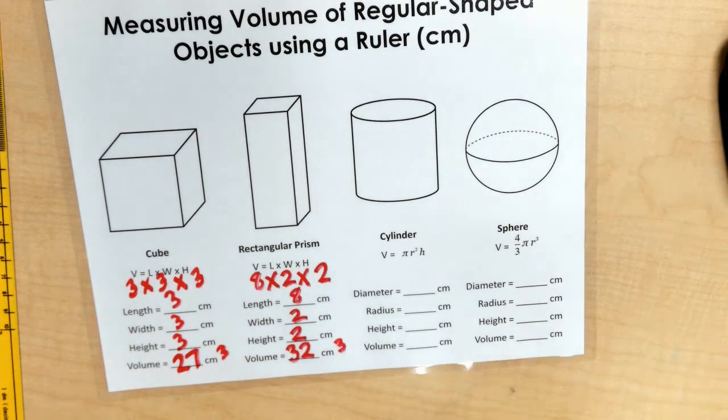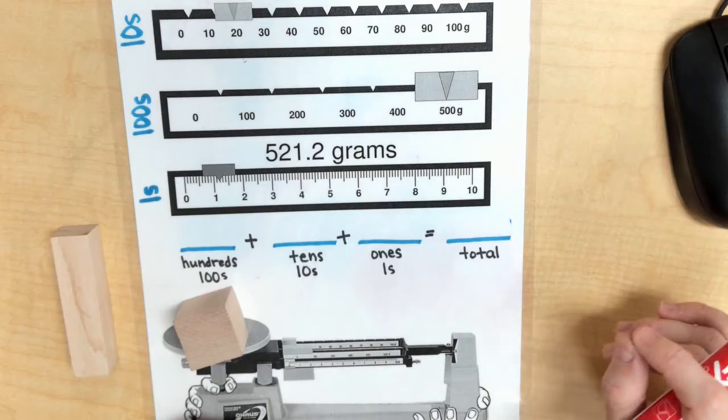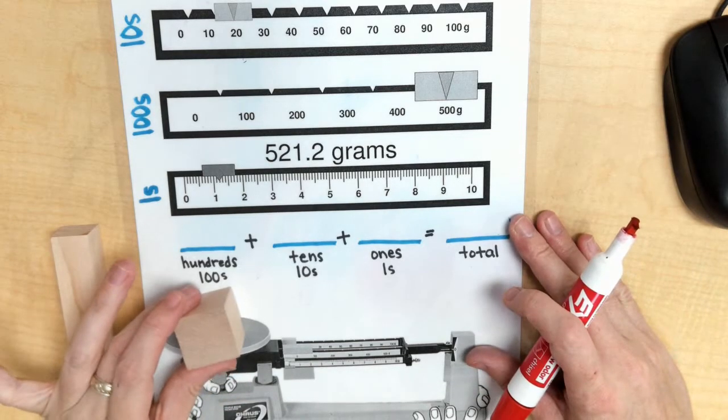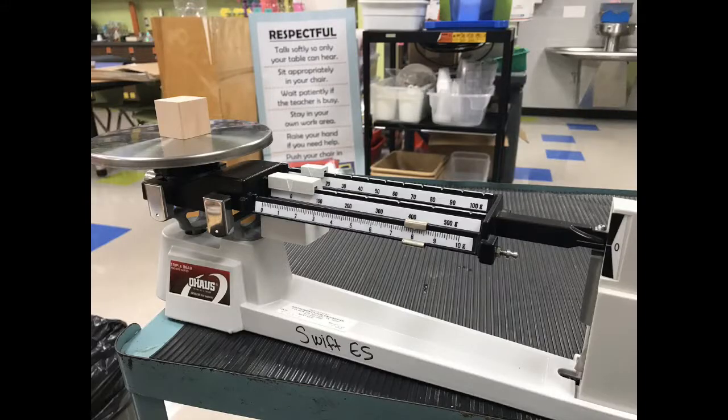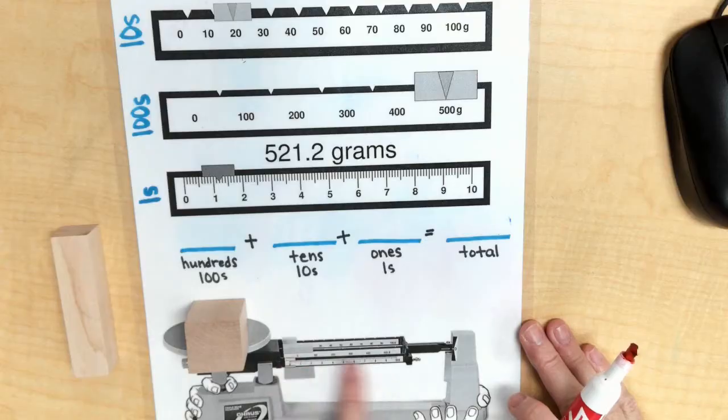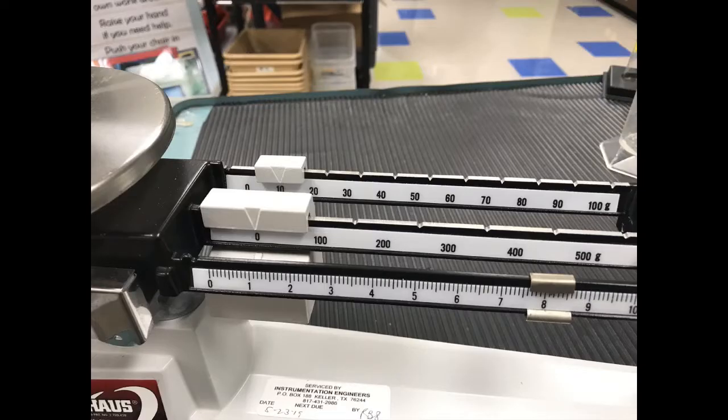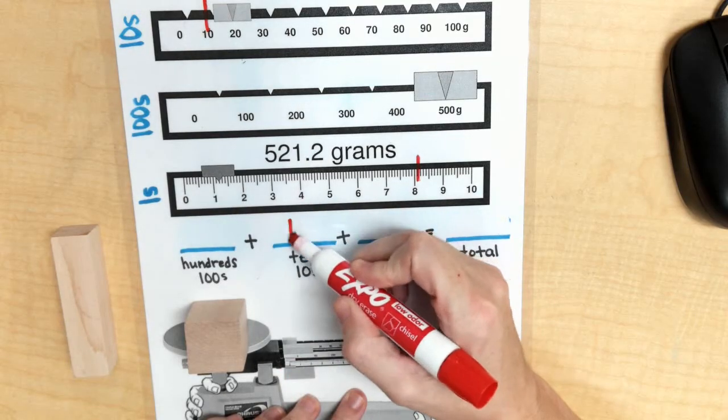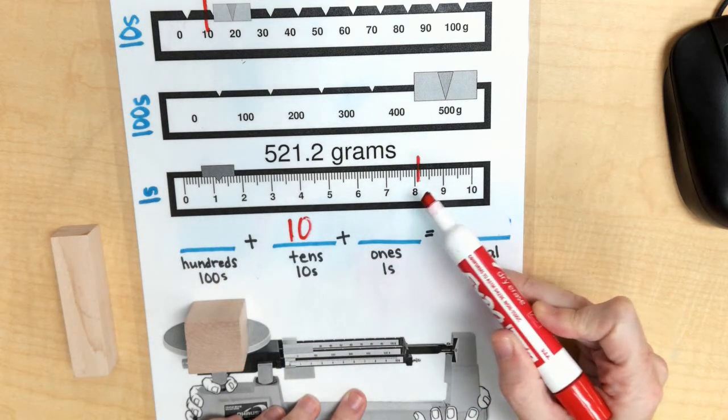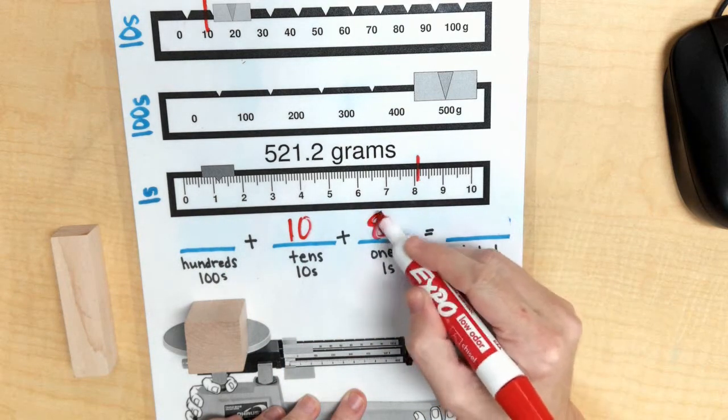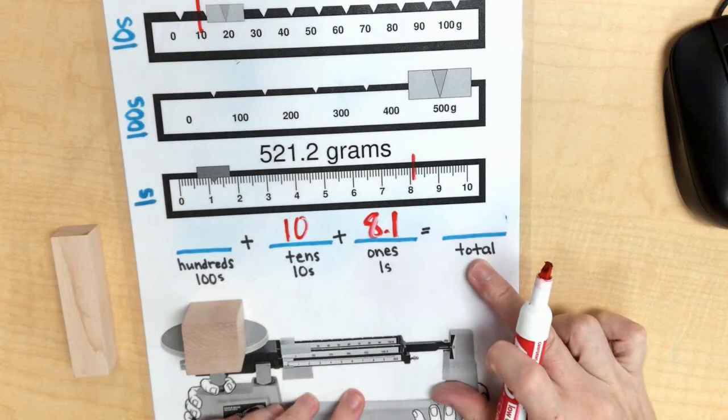So when measuring the mass of my cube, I placed it on my triple beam balance. I moved the riders over to where it leveled off. And it read for me, I had 1, 10, and then in my 1s it went to 8.1. And so when I added all those up together, I had a mass of 18.1 grams.